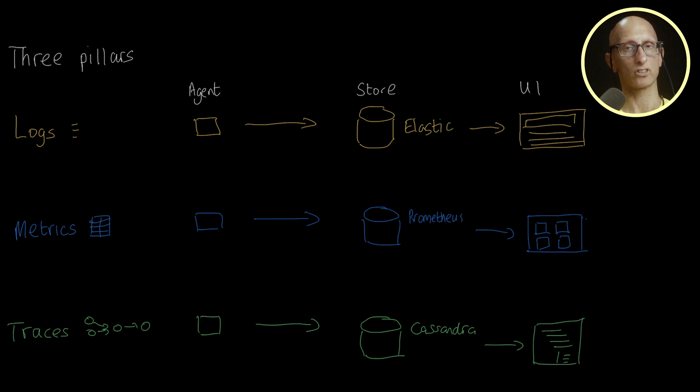Hopefully this diagram shows that we've created some problems for ourselves because of the artificial boundary between our observability data. The most obvious problem is that we're paying and/or maintaining three different systems for this data.